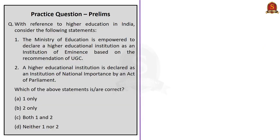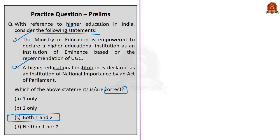Now for the practice questions. The first question is about higher education in India. Statement one: the Ministry of Education is empowered to declare a higher educational institution as an institution of eminence based on the recommendation of the University Grants Commission—this is correct. Statement two: a higher educational institution is declared as an institution of national importance by an act of parliament—this is also correct. So the correct answer is option C, both one and two.